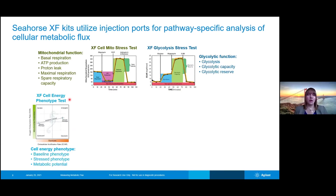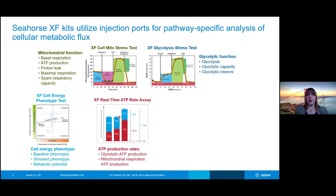Another test kit is the cell energy phenotype test. In this test, we're focusing on both oxygen consumption rate as well as extracellular acidification rate. We put the cells under stress so we can see what their baseline OCAR and ECAR are, as well as what their stressed OCAR and ECAR are. In the next assay, we have a real-time ATP rate assay, which really zeroes in on what is the amount of ATP produced by both mitochondrial respiration and glycolysis.